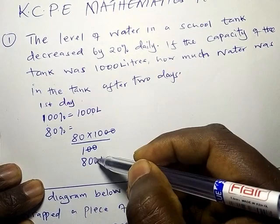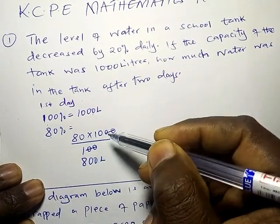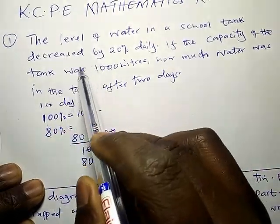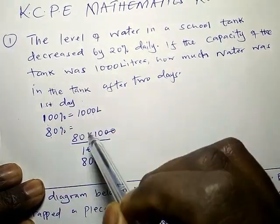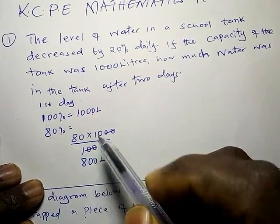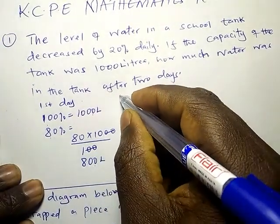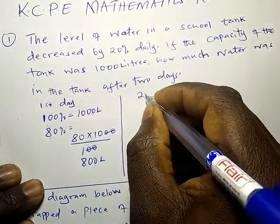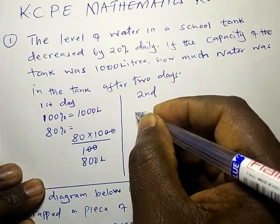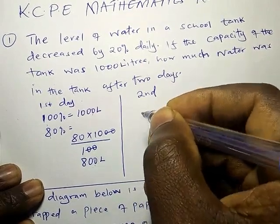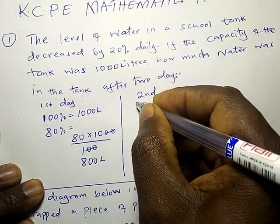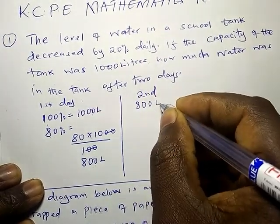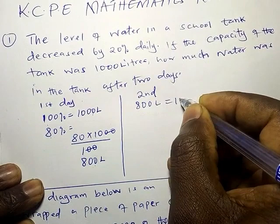So after one day, 200 liters must have been removed, leaving us with 800 liters. Now let us go to the second day. On the second day, our 100% — the water in the tank — is 800 liters, so 800 liters represents 100%.